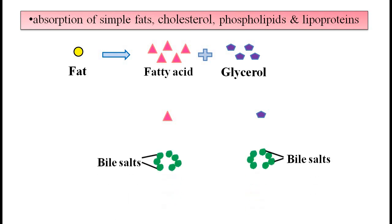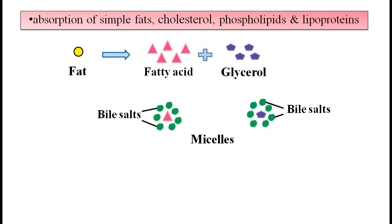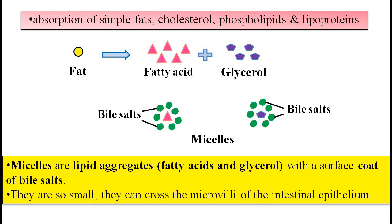When fats are digested into fatty acids and glycerols, these fatty acids and glycerols are coated by bile salts forming micelles. Micelles can be defined as lipid aggregates with a surface coat of bile salts. Micelles are very small and can easily cross the microvilli of the intestine. Thus, bile performs two functions: it helps in the emulsification of fats before their digestion, and once fats are digested, bile aids the absorption of these digested lipids in the form of micelles.